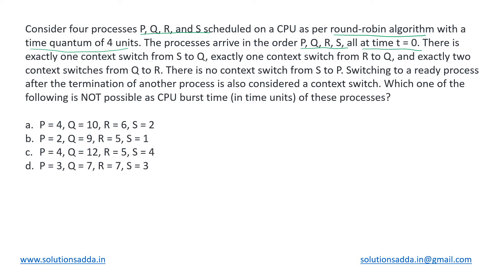All at the same time T equal to 0, means the arrival time for all of them is the same. Now they are mentioning what are the context switches we will be encountering in this schedule. There is exactly one context switch from S to Q, exactly one from R to Q, and exactly two from Q to R. Switching to a ready process after the termination of another process is also considered a context switch.